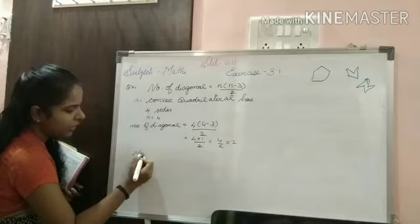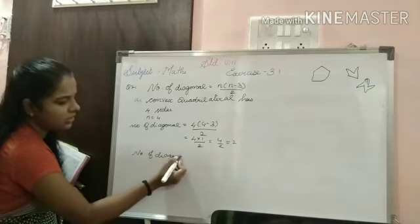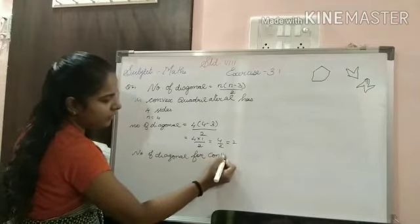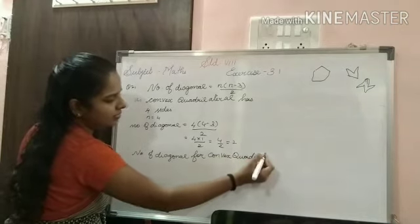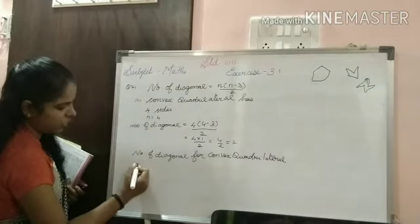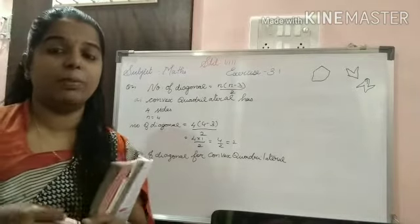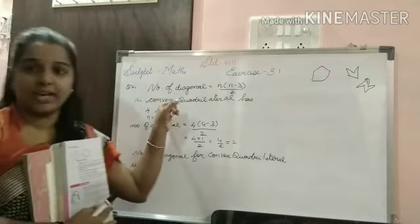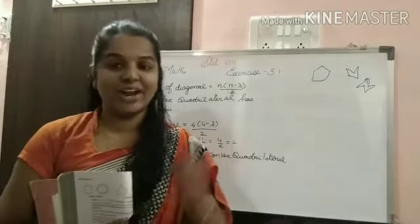So therefore number of diagonal for convex quadrilateral is 2 diagonals. Understand students, like this you will do it for hexagon. Hexagon you will take as side 6 and for triangle you will take the side as 3. And you will find the diagonal.